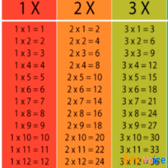Then table of 3: 3 1s are 3, 3 2s are 6, 3 3s are 9, 3 4s are 12, 3 5s are 15, 3 6s are 18, 3 7s are 21, 3 8s are 24, 3 9s are 27, 3 10s are 30, 3 11s are 33, 3 12s are 36. One more time.